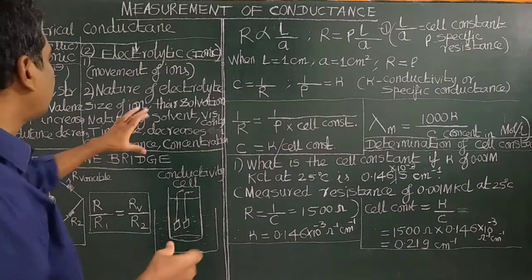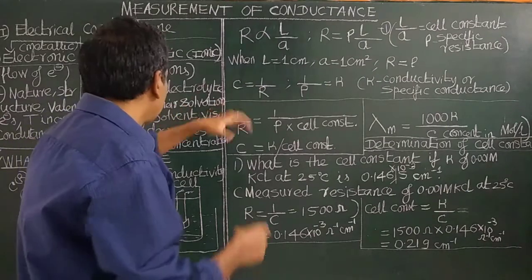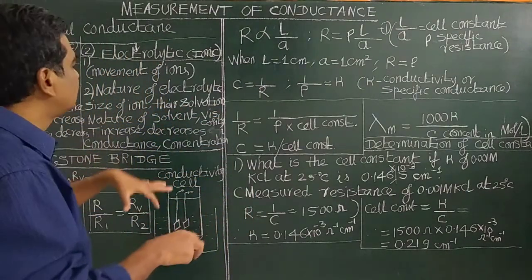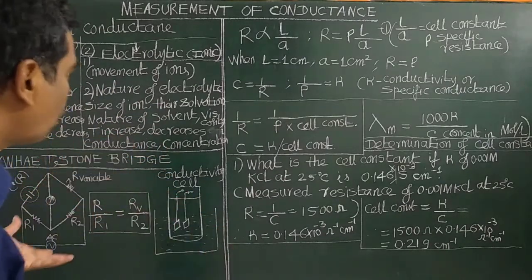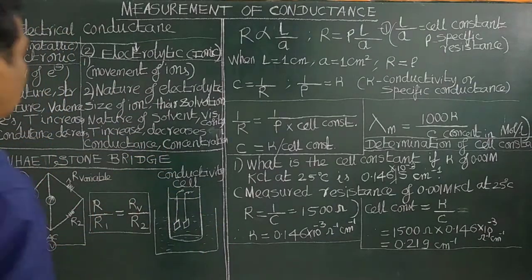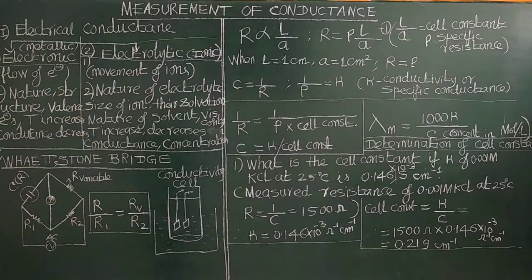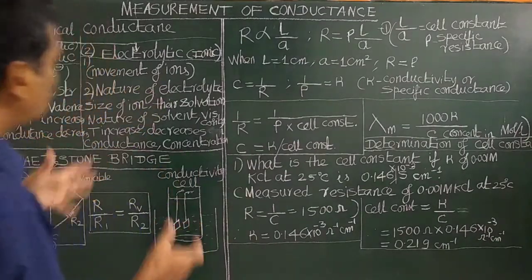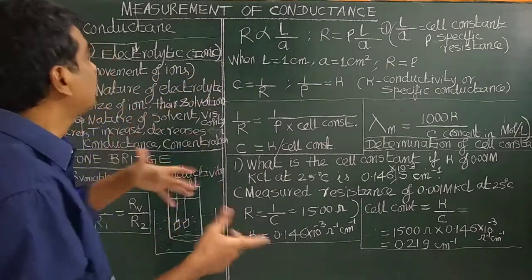In electrolytic conductance, the conductance is due to the dissolution of electrolytes in solution. Electrolytes dissolve in the solvent — for example, sodium chloride, potassium chloride. These are electrolytes — weak electrolyte, strong electrolyte. They give ions in solution, and the movement of ions gives the conductance.